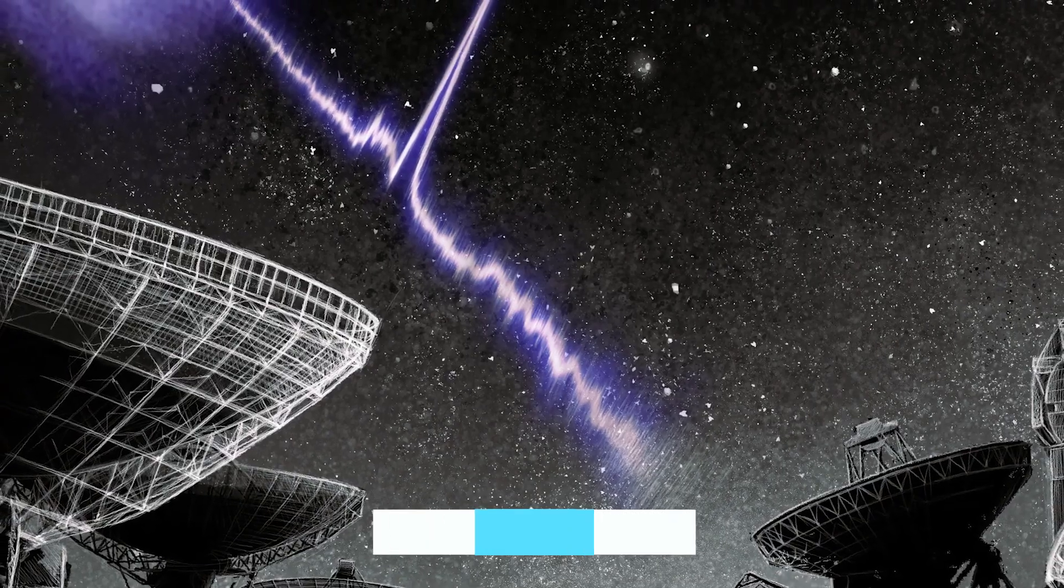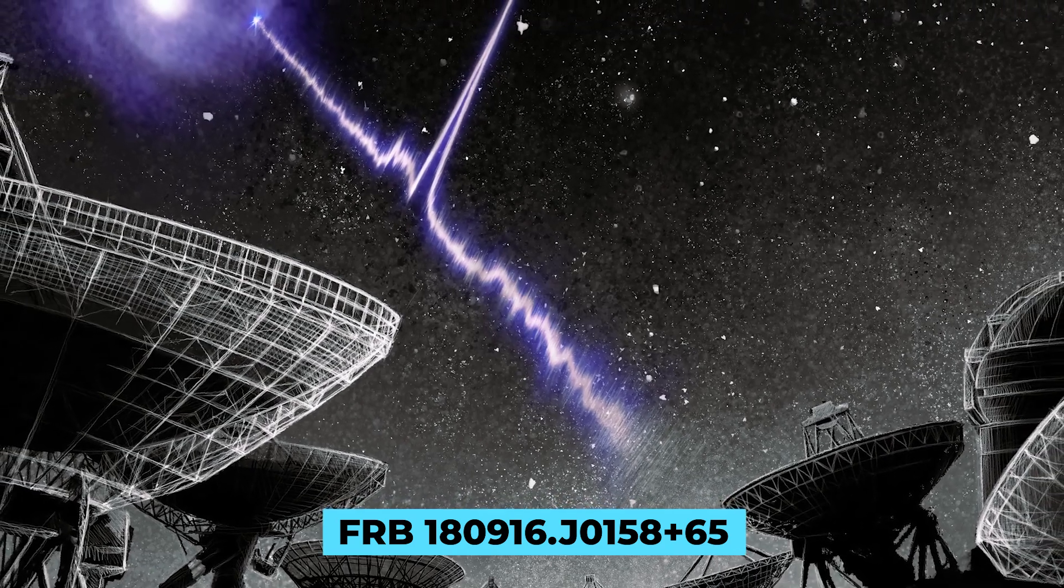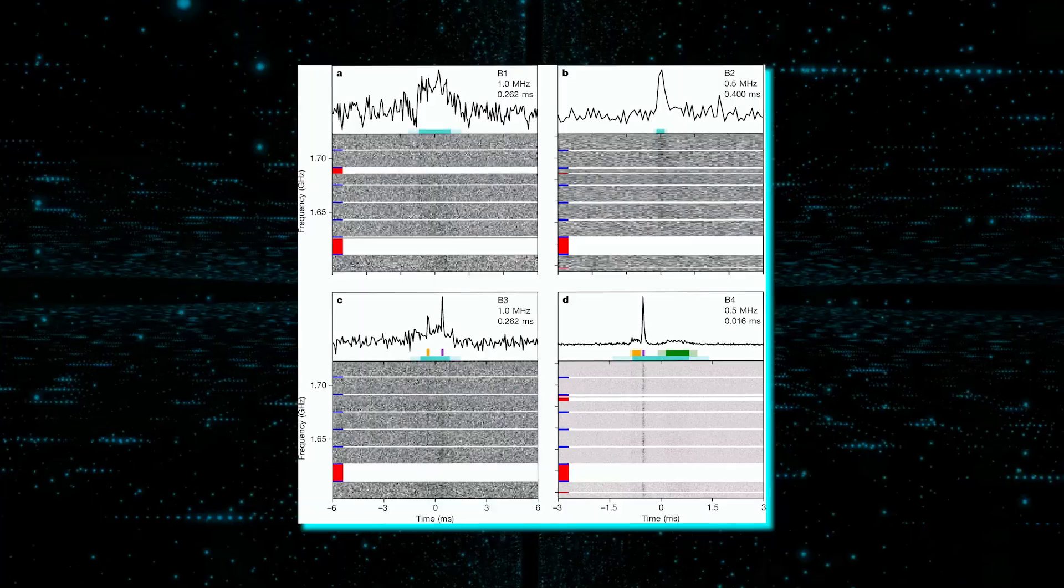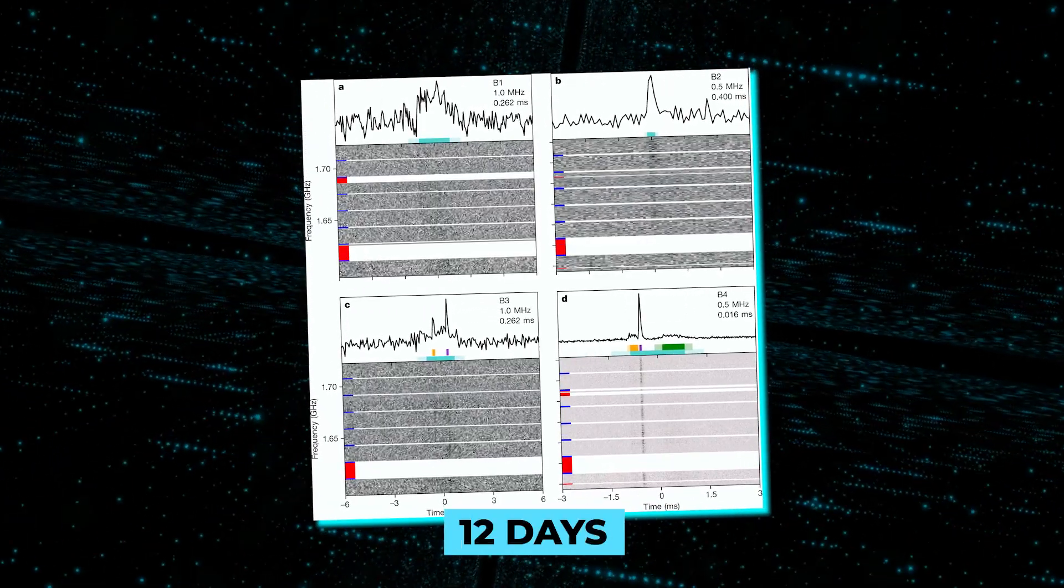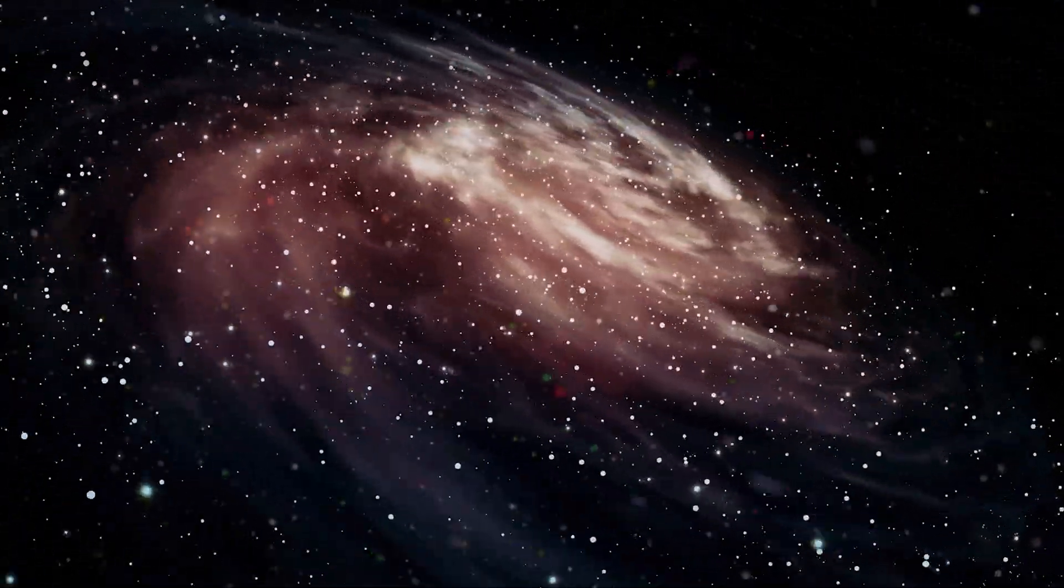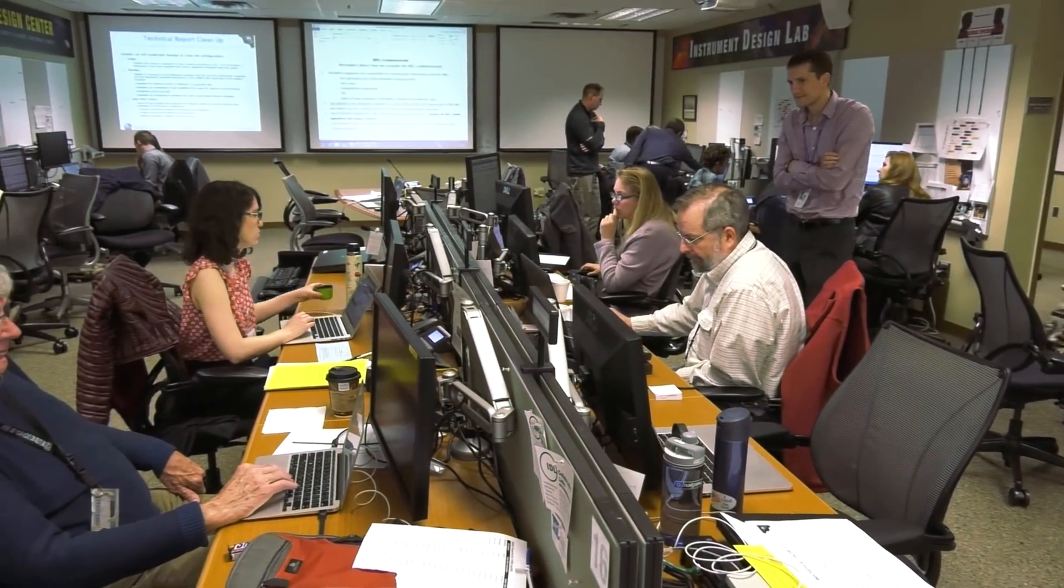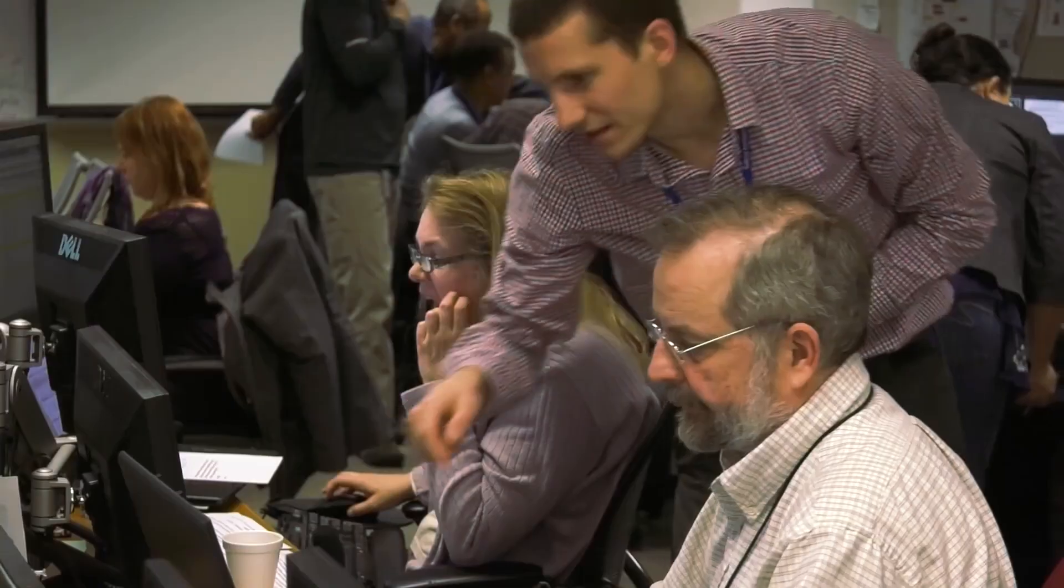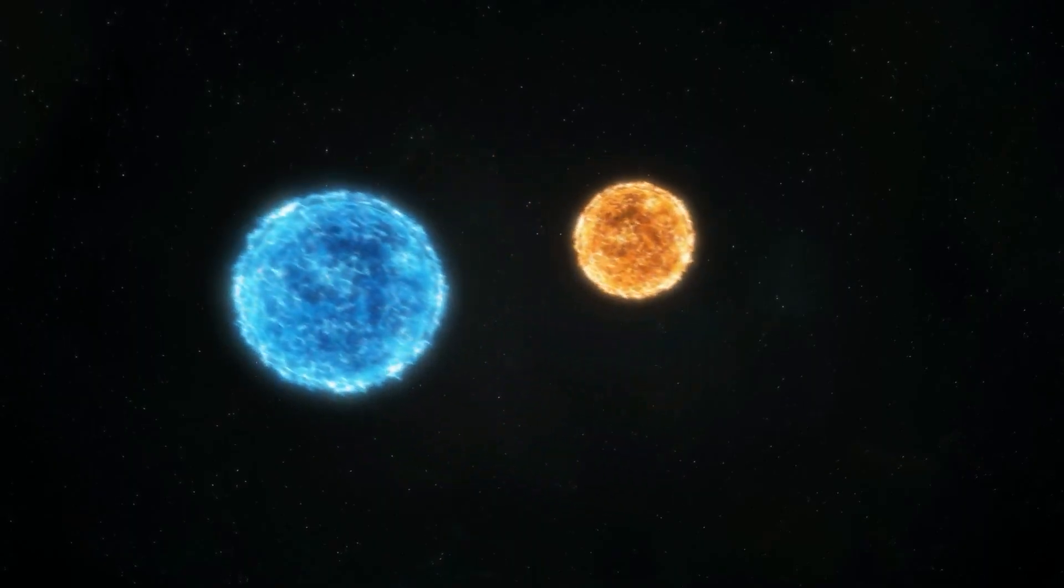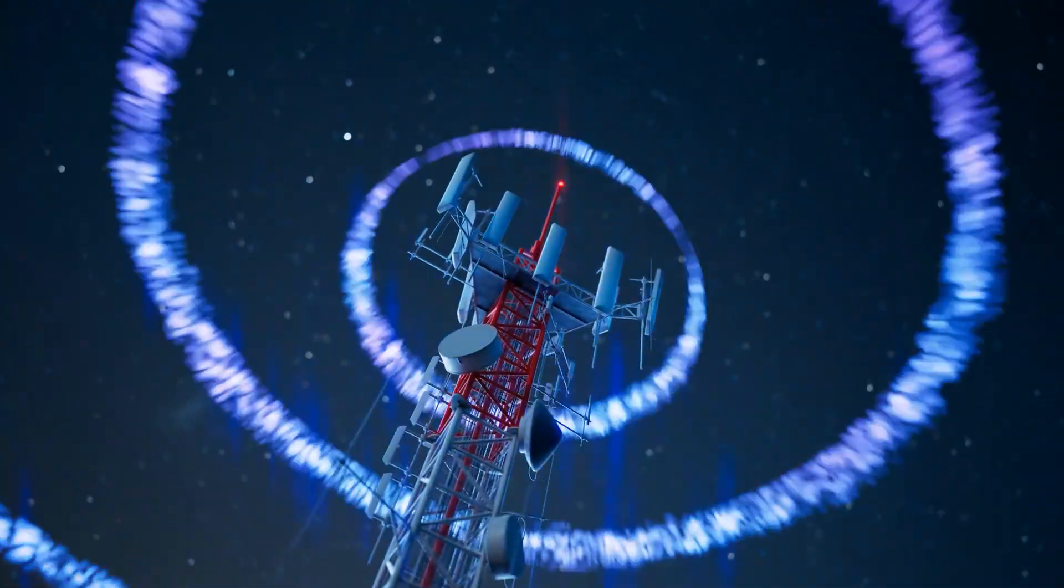The FRB-180916J0158-65 signal would emit one or two bursts per hour for four days, then go silent for 12 days before repeating the cycle. The signal was found to be coming from a massive spiral galaxy 500 million light-years away. Astronomers and physicists are still trying to figure out what is causing this recurring pattern. A rotating neutron star, a binary star system, or even an artificial transmitter are all possibilities.